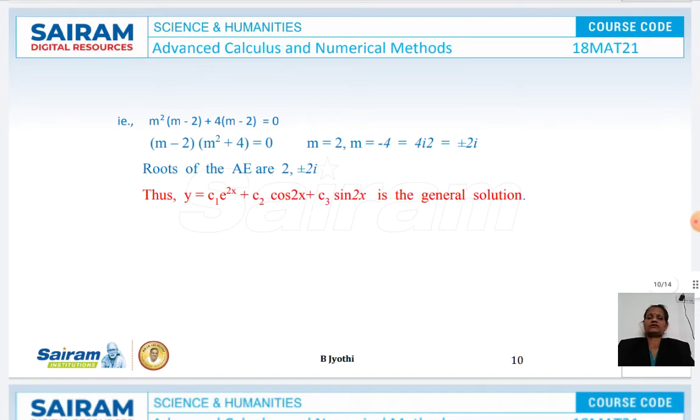Now, after factorization, we get m = 2 ± 2i. Thus, the general solution will be y = c₁e^(2x) + e^(2x)(c₂cos(2x) + c₃sin(2x)). That is the general solution.